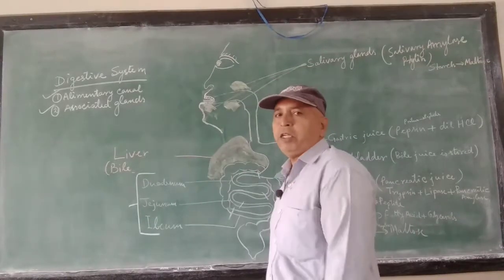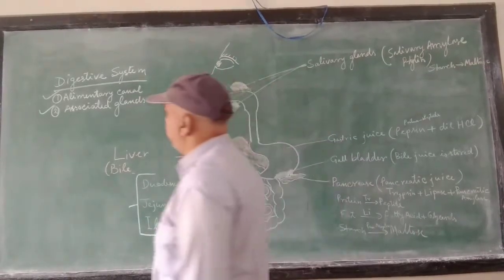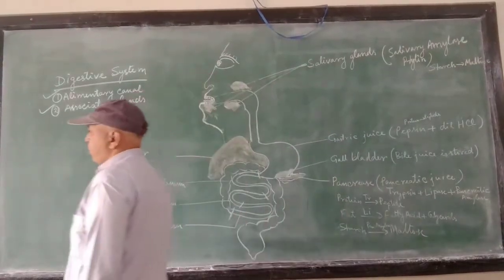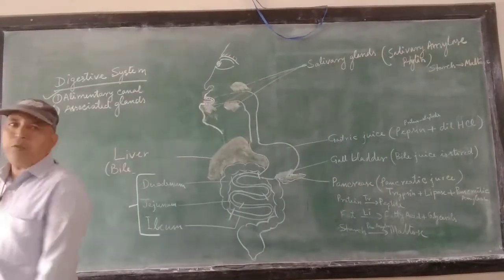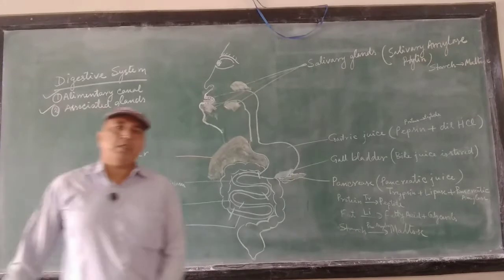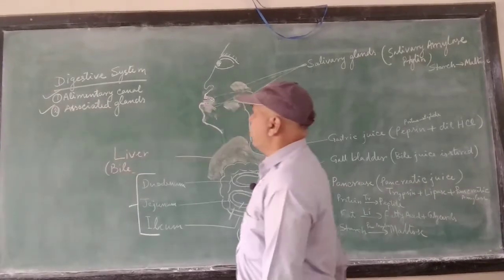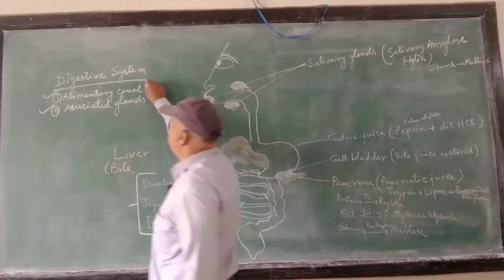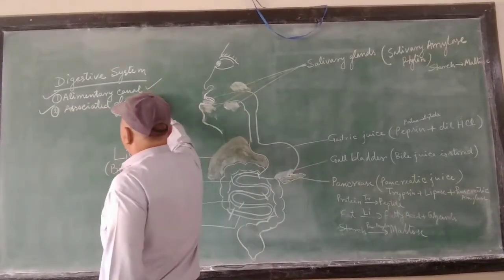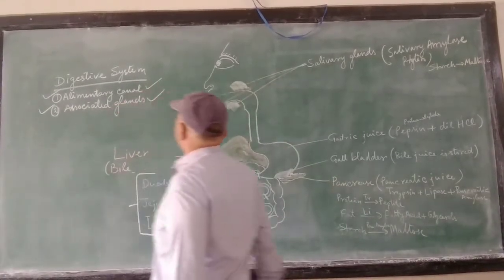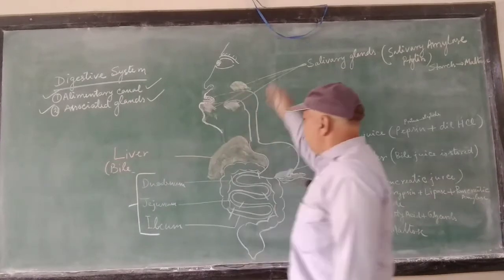Dear students, today we will be reading about the human digestive system. The human digestive system is basically studied as the alimentary canal and associated glands.